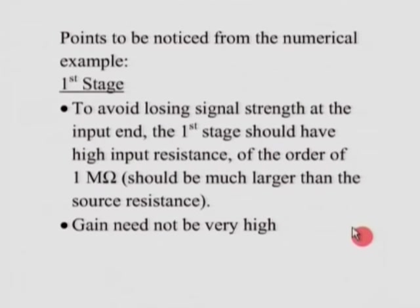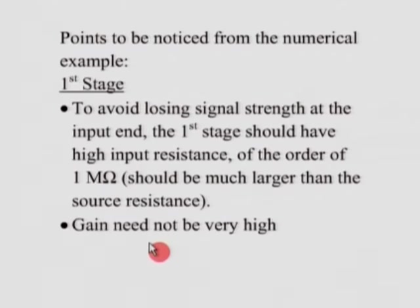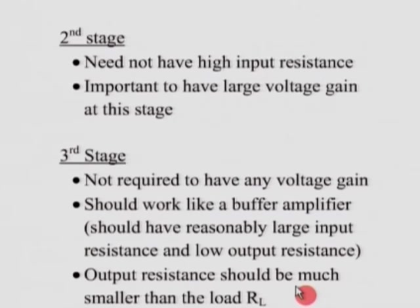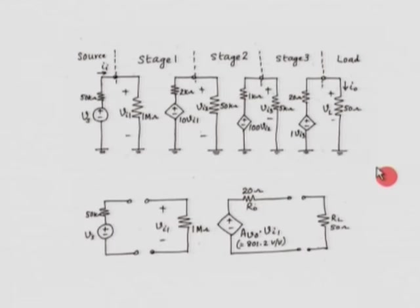To reiterate what we observed: if we want to avoid losing signal strength at the input end, the first stage should have fairly high input resistance — on the order of 1 megaohm or higher — much higher than the source resistance. But the gain of the first stage need not be high. The second stage need not have high input resistance but must have large voltage gain. The third stage is not required to have any voltage gain; it should work like a buffer amplifier with reasonably high input resistance and definitely low output resistance — much smaller than the load.